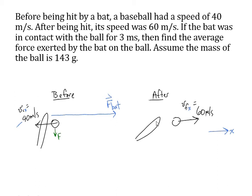And in the after, the bat has now hit the ball. The ball is sailing off to the right at 60 m/s. The final speed is 60 m/s. The final velocity component is also 60, positive 60 m/s.